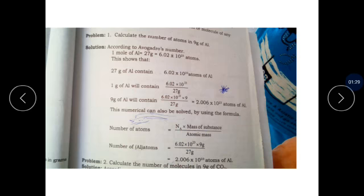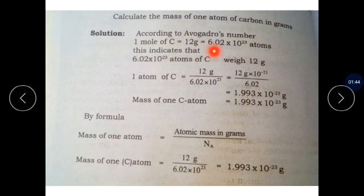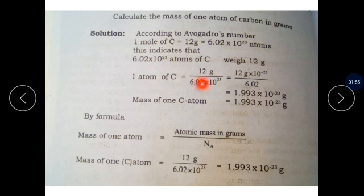Now let's look at the second numerical: Calculate the mass of one atom of carbon in grams. We need to find the mass of one atom of carbon. According to Avogadro's number, one mole of carbon is equivalent to 12 grams. In 12 grams, the number of atoms is 6.02 × 10²³. This means 6.02 × 10²³ atoms of carbon weigh 12 grams. For one atom of carbon, we divide 12 by 6.02 × 10²³.